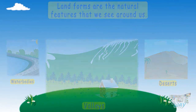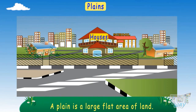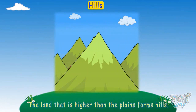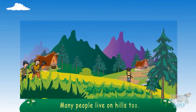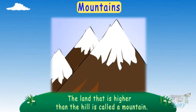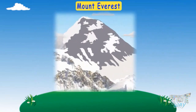Plains: A plain is a large flat area of land. Hills: The land that is higher than the plains forms hills, and many people live on hills too. Mountains: The land that is higher than a hill is called a mountain peak. Mountains are mostly covered with snow. Mount Everest is the highest peak in the world.